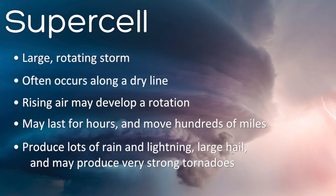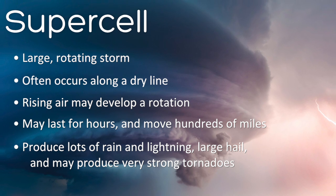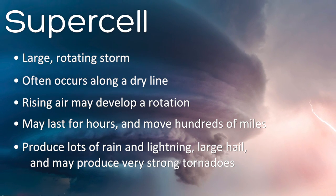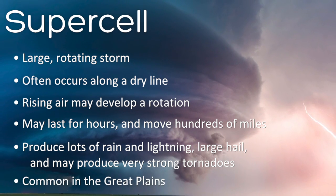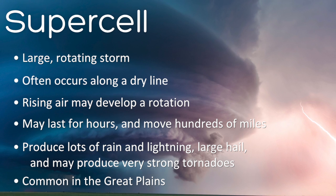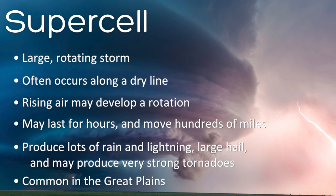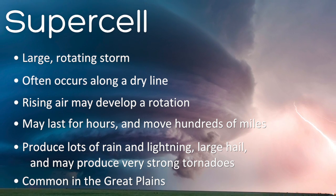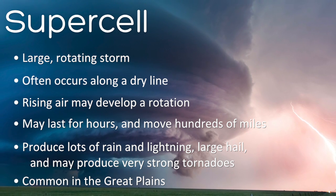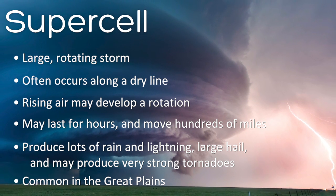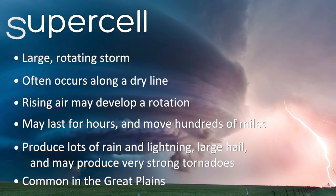Supercells produce lots of rain and lightning, large hail, and may produce very strong tornadoes. Supercell storms are more common in the Great Plains area of the United States, although they can occur in many other locations of the U.S. as well.